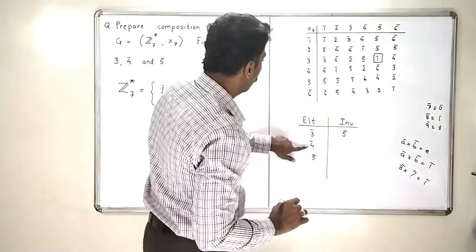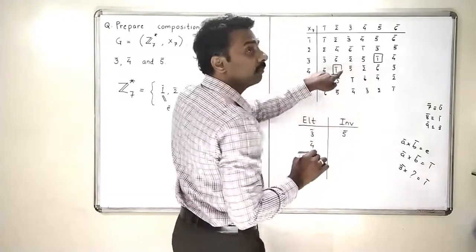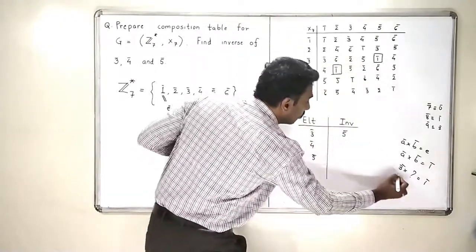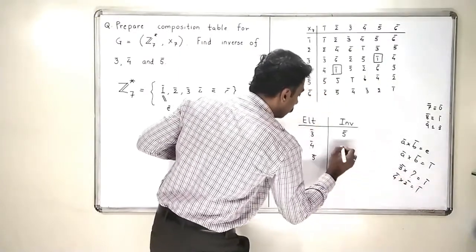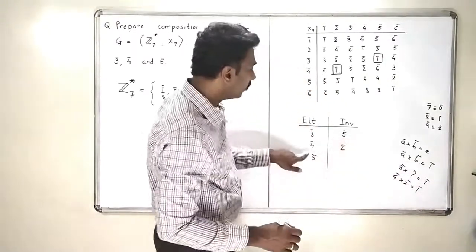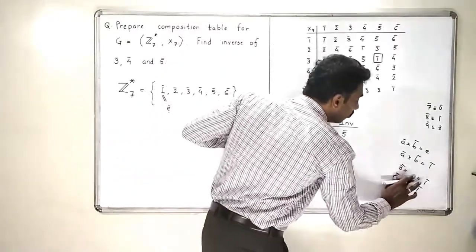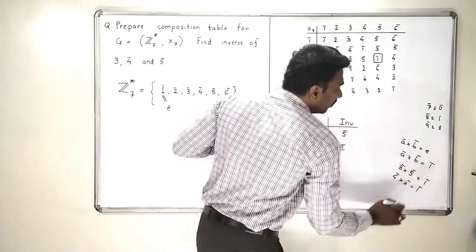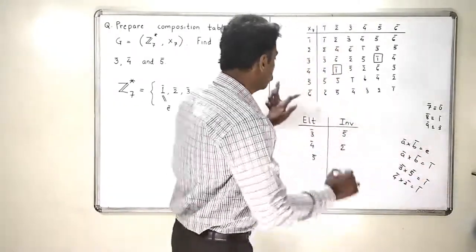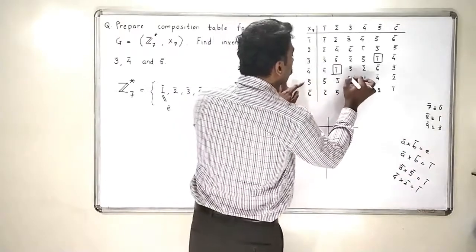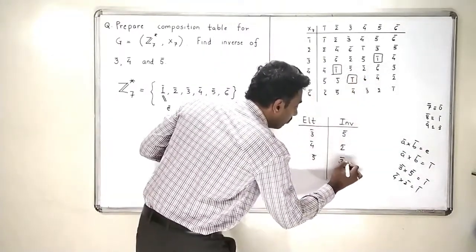For 4-bar: 4-bar × 2-bar gives 1-bar, so the inverse of 4-bar is 2-bar. For 5-bar: we already know 3-bar × 5-bar = 1-bar, and therefore 5-bar × 3-bar is also 1-bar. You can check in the table — 5-bar × 3-bar is indeed 1-bar. So the inverse of 5-bar is 3-bar.